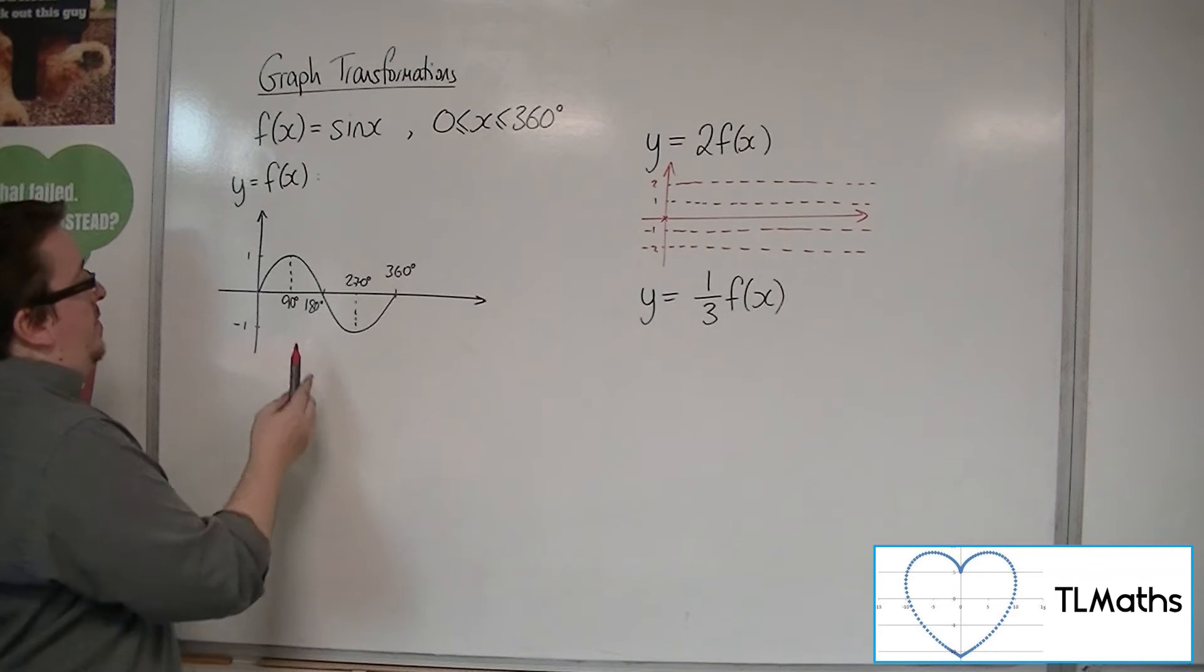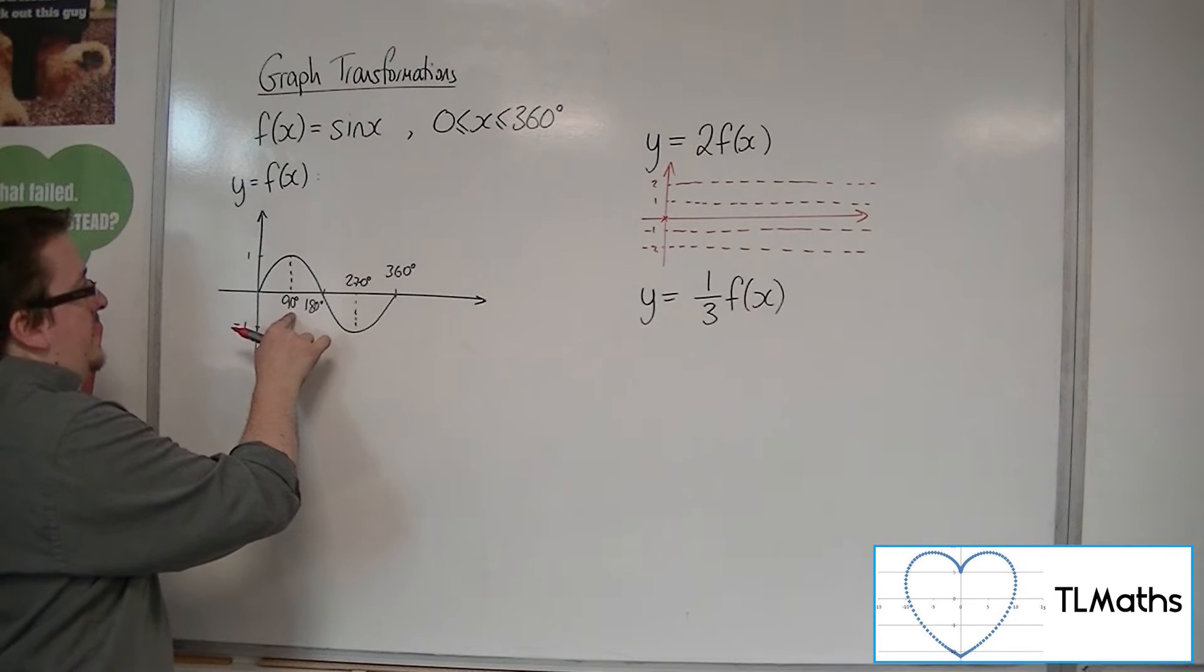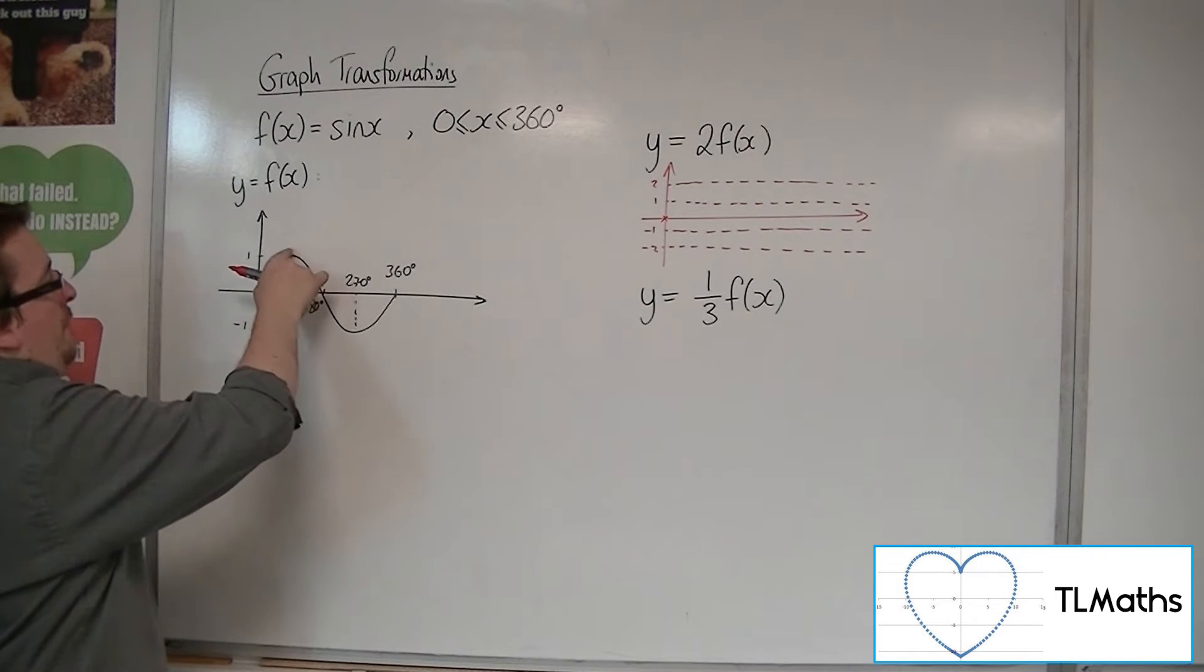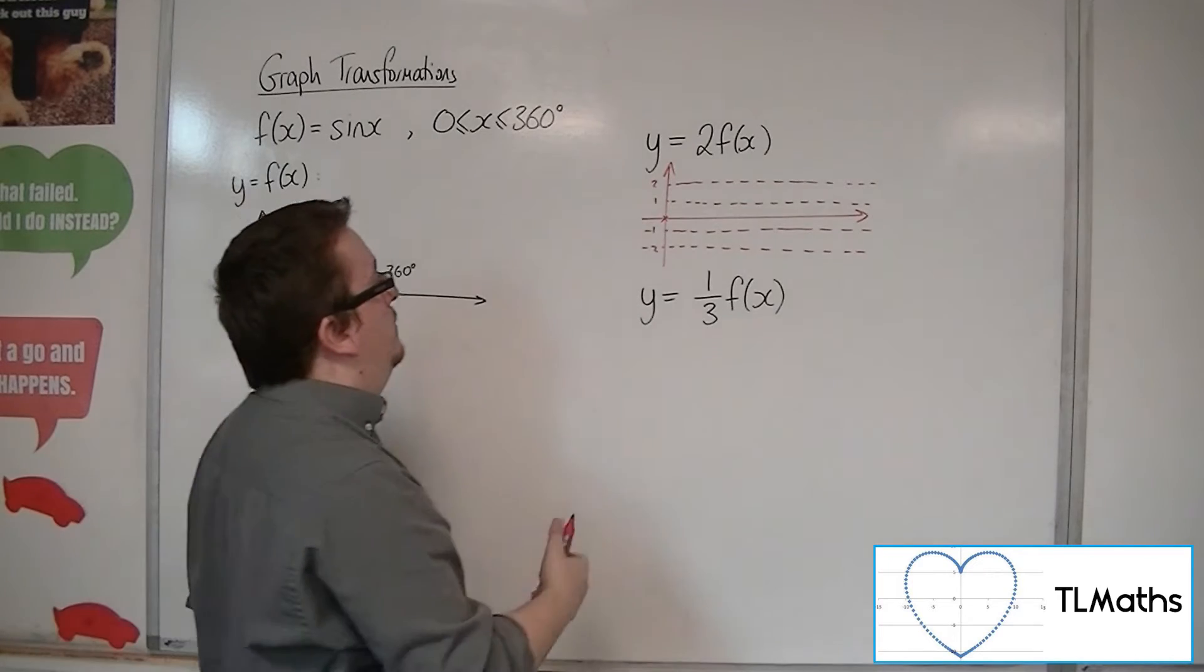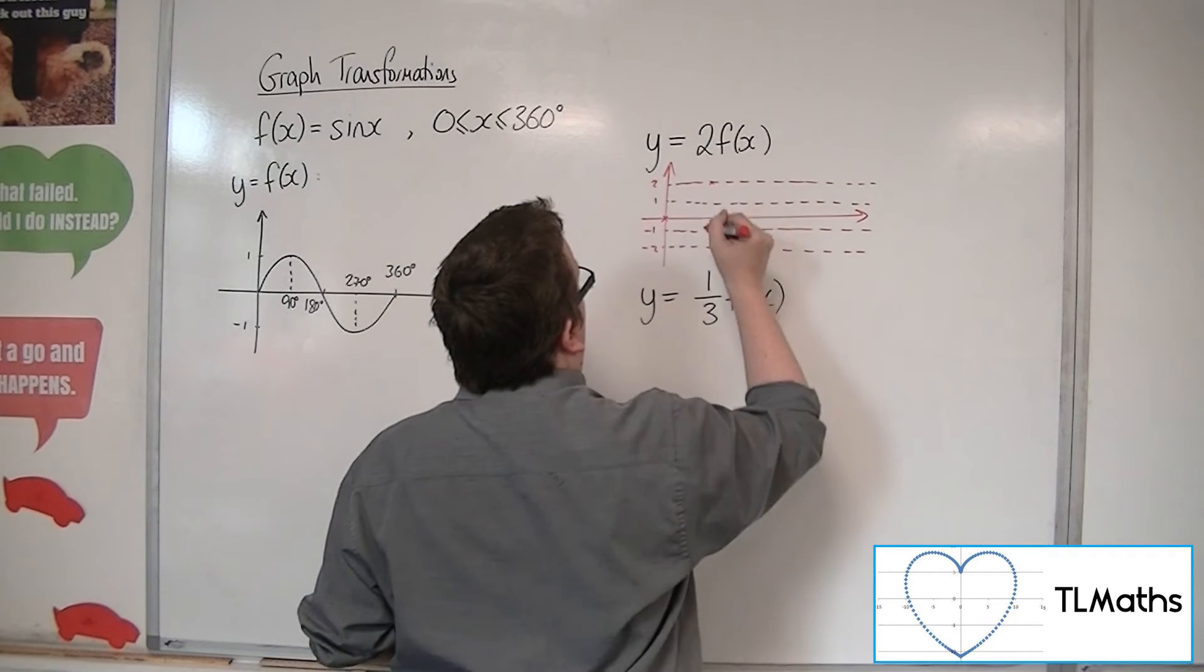What's going to happen is that when x is 90, f(90) is 1, so 2 lots of 1 is 2. So the curve will go through 2.